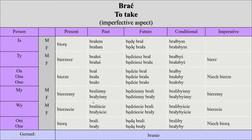'Braliśmy' — we were taking. But 'brałyśmy' if you were girls — we were taking. If I'm talking to a group of girls telling them 'you took something', it would be 'brałyście'. With the same concept for the future — this is the imperfective form — for the future you add 'będzie'.